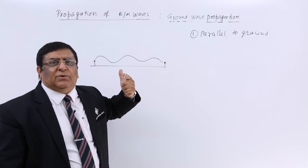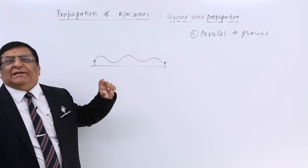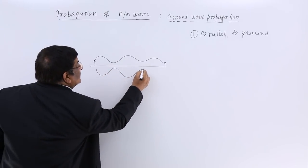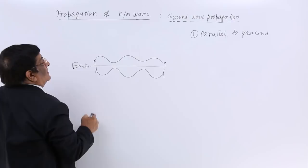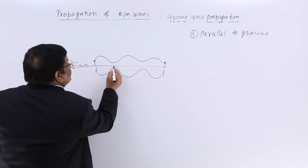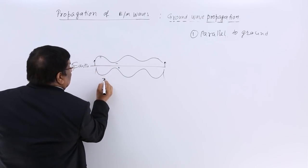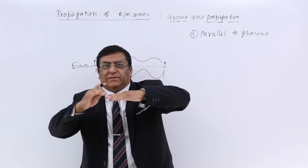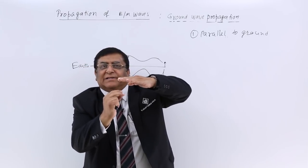During transmission, the waves oscillate plus to minus and minus to plus, and they induce another wave in the surface of the earth. A positive field coming from the wave induces a negative field in the earth, and a negative field induces a positive field — a continuous induction effect along the earth's surface.